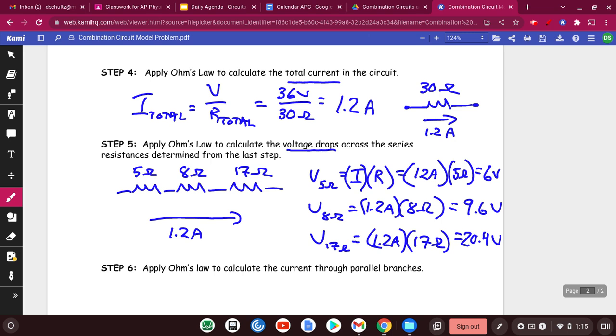Now, one thing you'll notice is that the biggest resistance, the 17, uses the most volts, and the smallest resistance uses the least volts. So that's important.